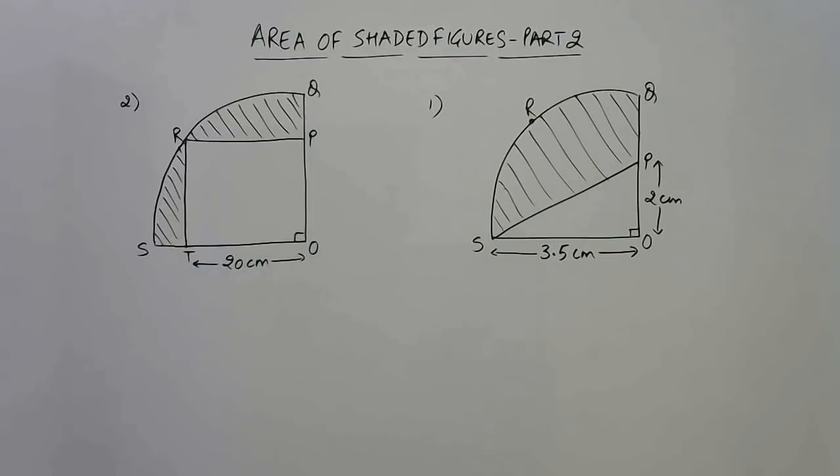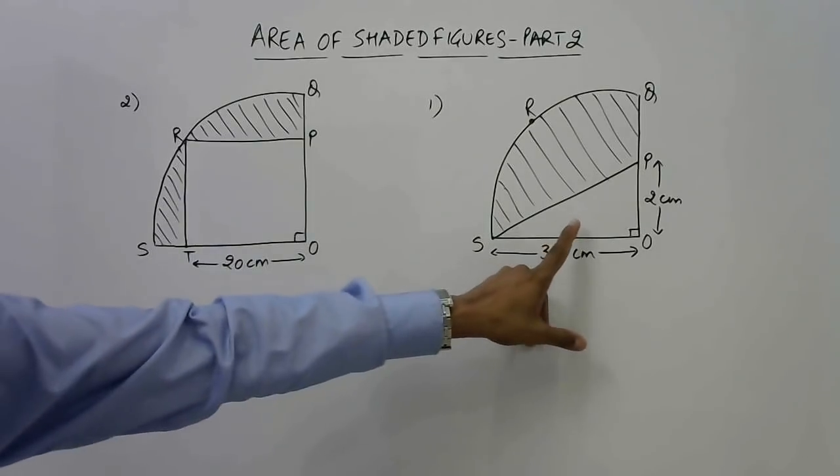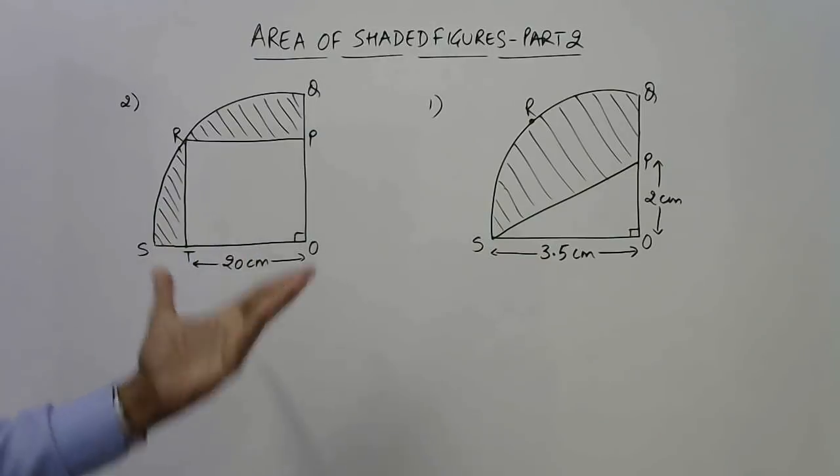The trick is very simple - you have to find the area of the quadrant first and subtract the area of the unshaded portion. That will give you the area of the shaded portion. But the thing is, what is the formula for finding the area of the quadrant, area of a right triangle, area of a square? These are the three things you need to know for this.